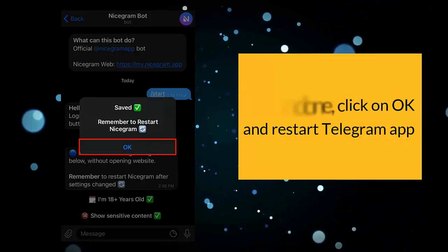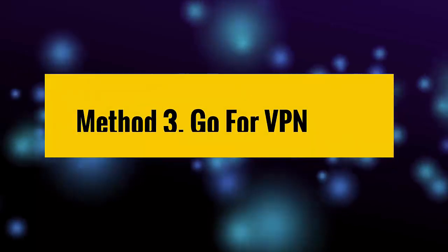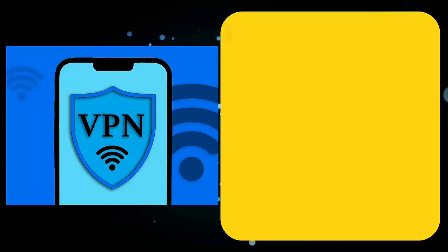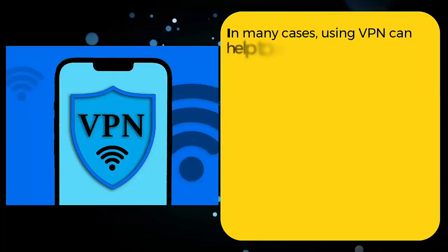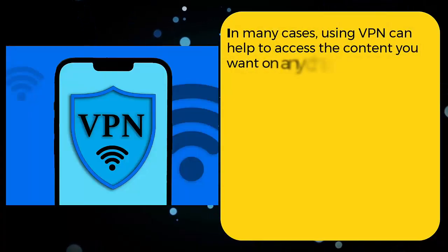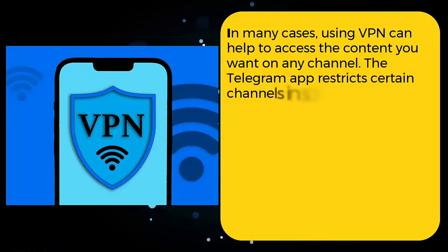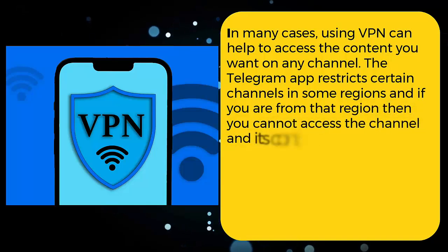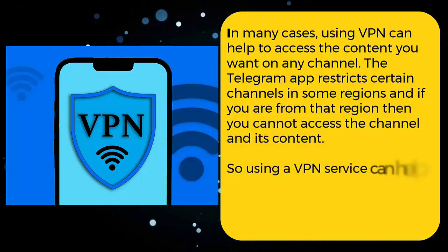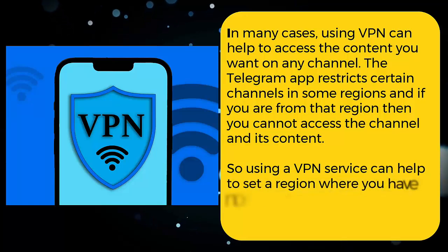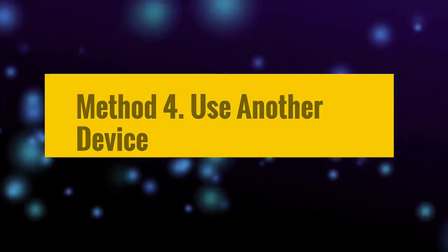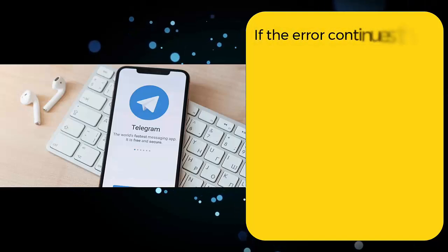Method three: go for a VPN. In many cases, using a VPN can help to access the content you want on any channel. The Telegram app restricts certain channels in some regions, and if you are from that region then you cannot access the channel and its content. So using a VPN service can help to set a region where you have no restrictions.